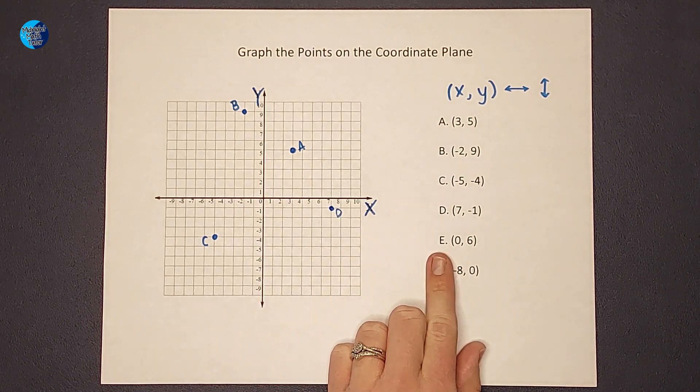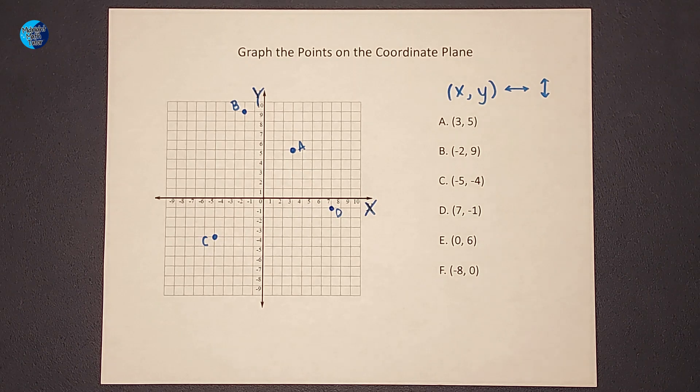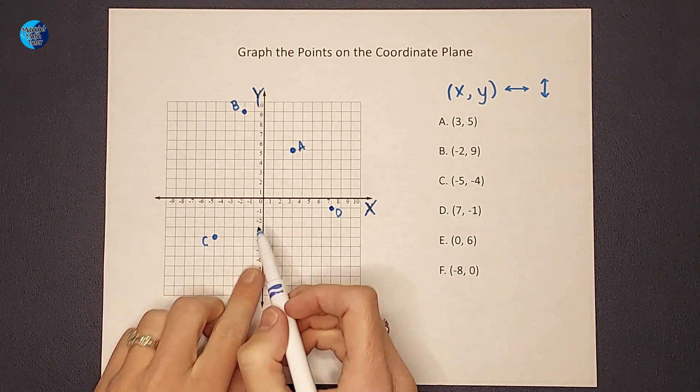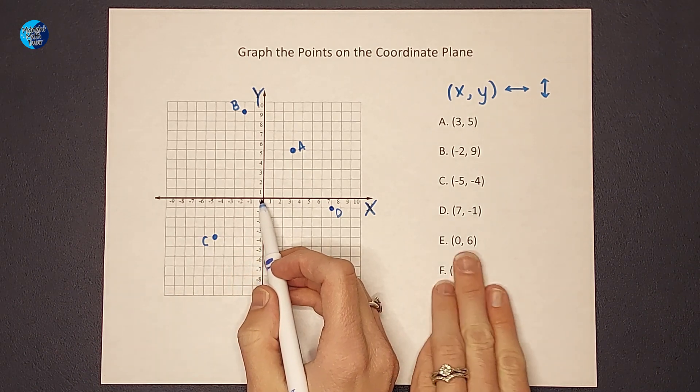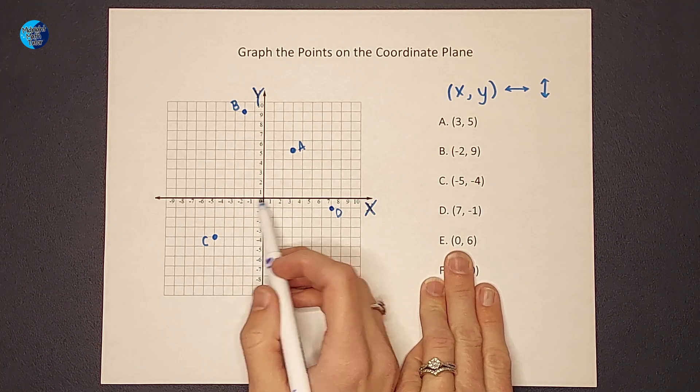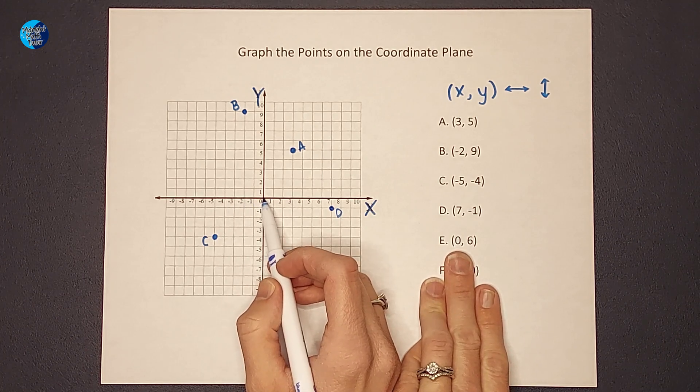Okay, sometimes we have 0s, right? So what does that mean? Well, remember I always start at 0, 0. And then when x is 0, that means I'm not gonna go right or left at all. I'm gonna stay at 0.